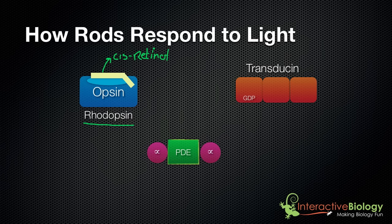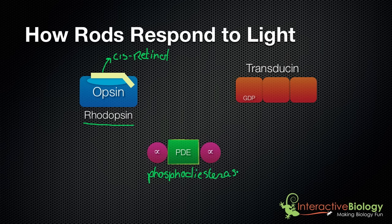Retinol is basically a slightly processed version of vitamin A, which explains part of the reason why vitamin A helps with vision. So we have cis-retinol and opsin, and together they make up rhodopsin. Then we have a trimeric molecule — meaning it has three subunits — called transducin. And then we have PDE, which stands for phosphodiesterase. So these are the major players inside the rods: rhodopsin, transducin, and phosphodiesterase.